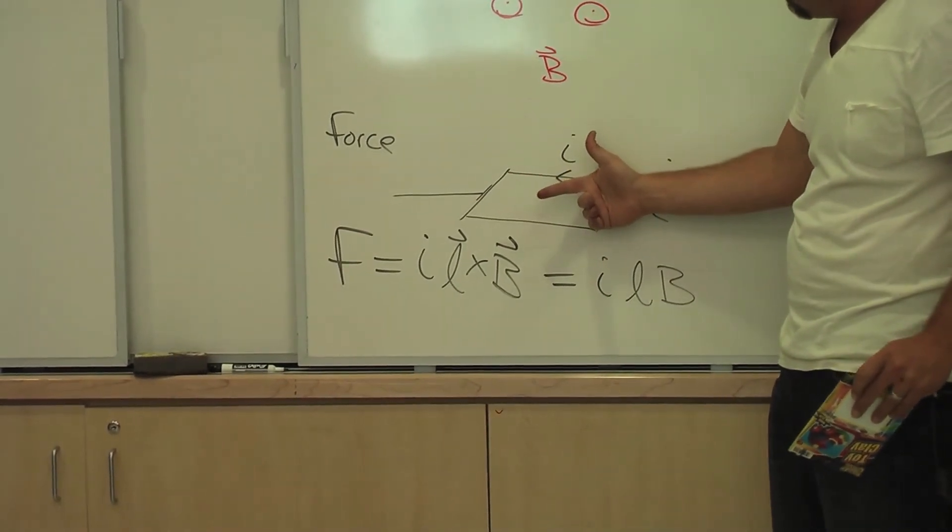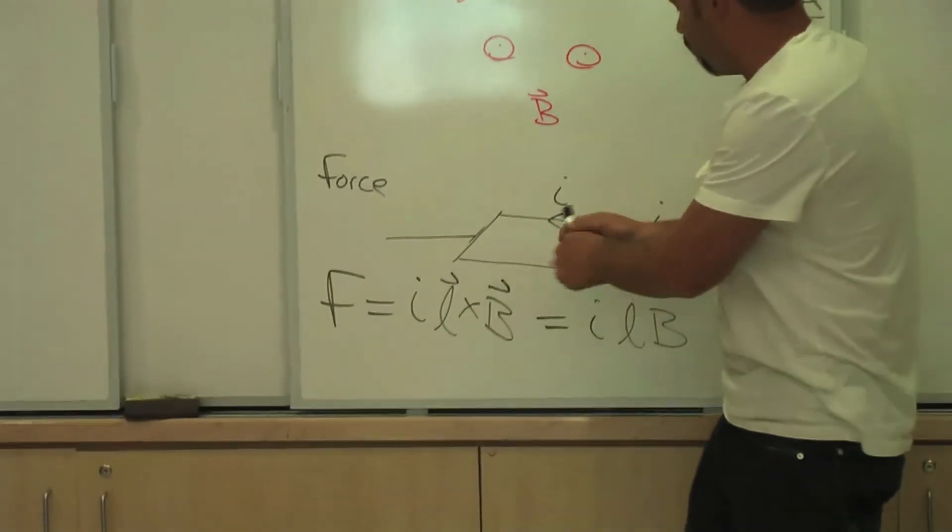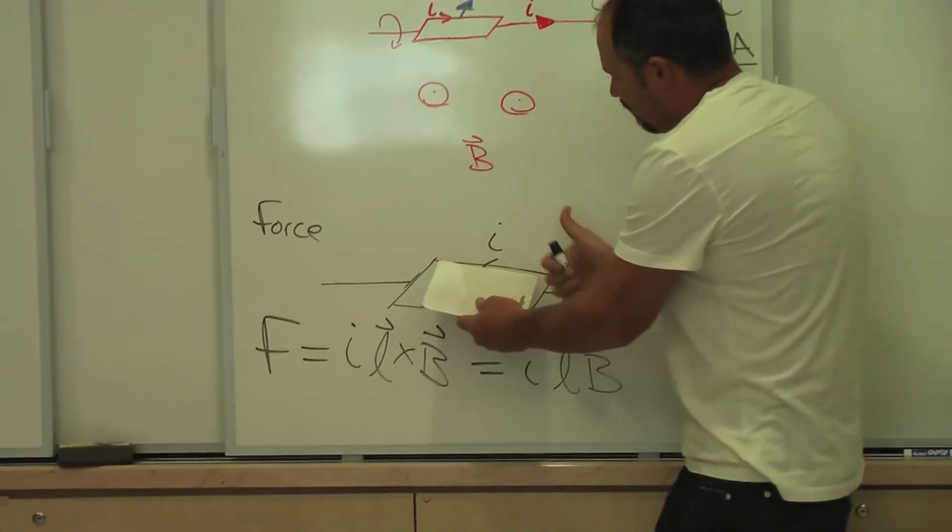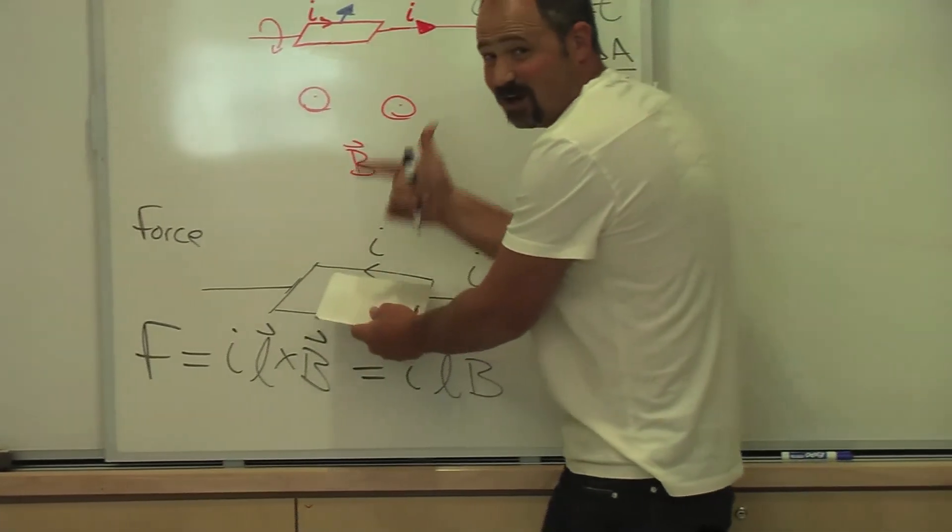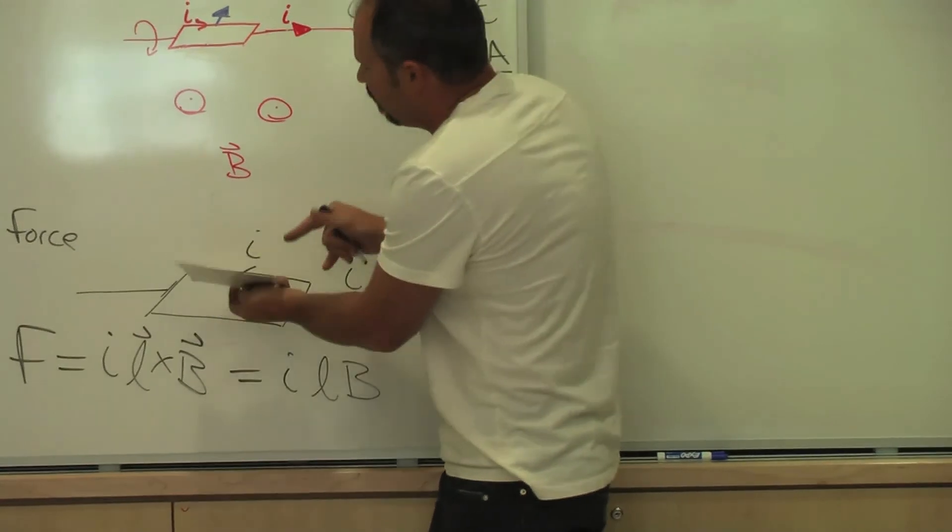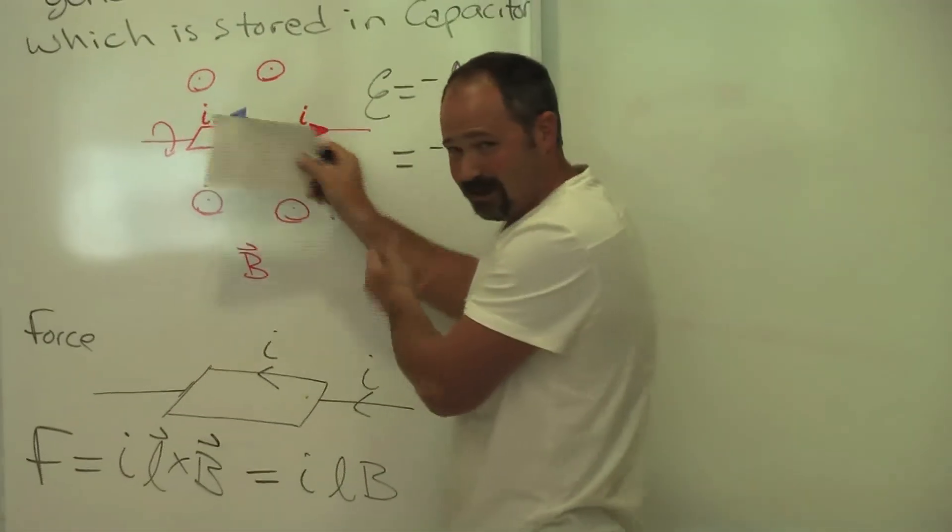In other words, if this coil is like this, current flowing this way, magnetic field out, the force is up, which will cause it to turn this way, which was the same direction we were turning it to generate the electricity.